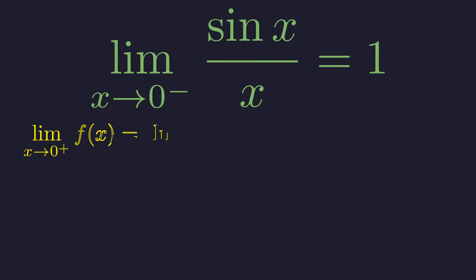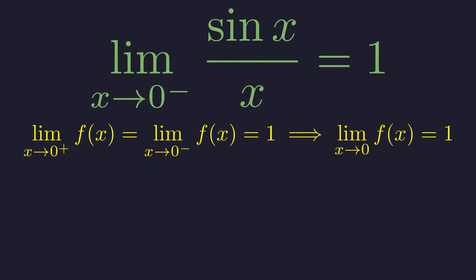Since the limit from the right equals the limit from the left, the two-sided limit exists and is equal to one. Our function has a well-defined limit at zero.